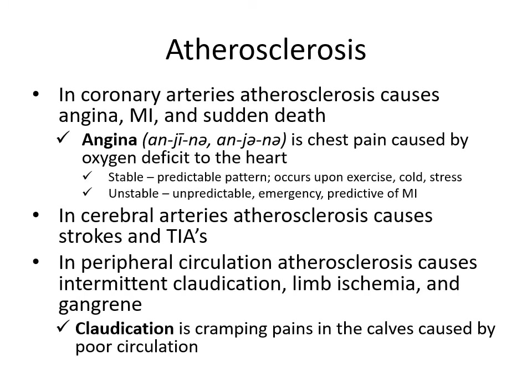In coronary arteries, atherosclerosis causes angina, MI, and sudden death. Angina is chest pain caused by oxygen deficit to the heart. There are two types: stable angina, which has a predictable pattern — for example, when you climb up the steps too quickly or it's cold out or you're stressed. We also have unstable angina, which is unpredictable, is an emergent situation, and predicts an oncoming heart attack — all of a sudden you have chest pain.